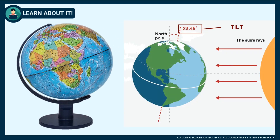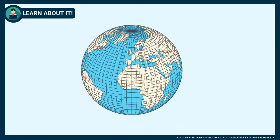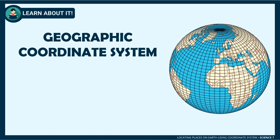Through time, both models have undergone modification to represent earth better. A common feature of maps and globes is the presence of intersecting horizontal and vertical lines to form a Cartesian plane. These imaginary lines form a grid collectively known as the geographic coordinate system.